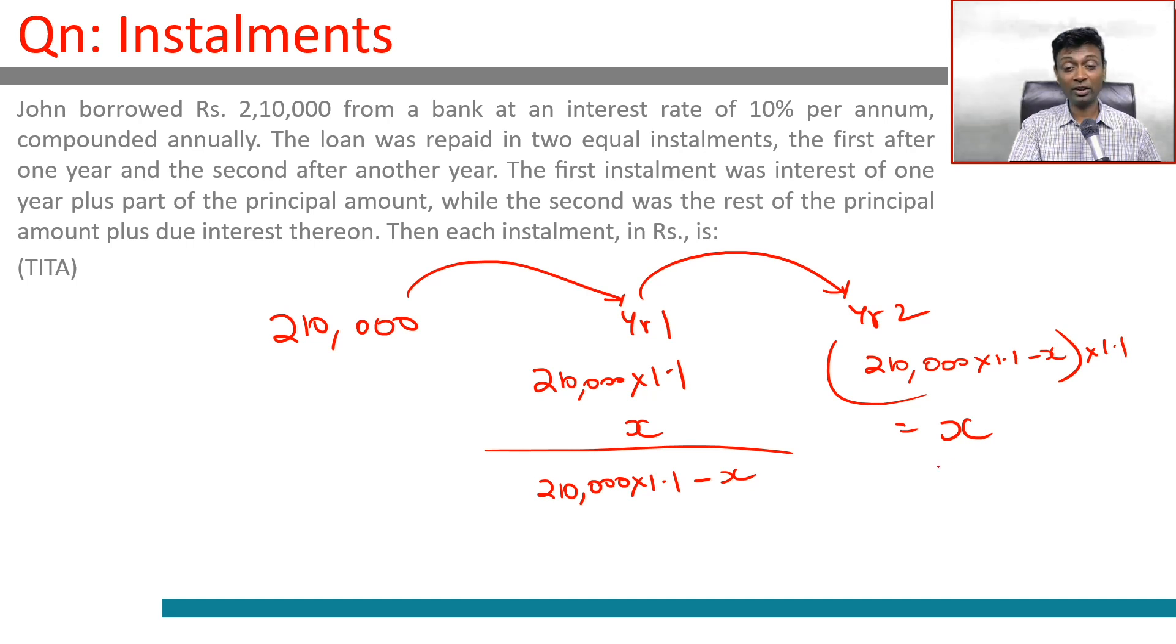Now this number we are being told is equal to X because we are paying in two equal installments. So 231,000 minus X into 1.1 equals X.